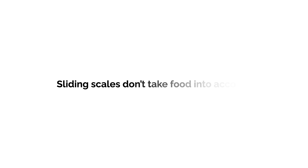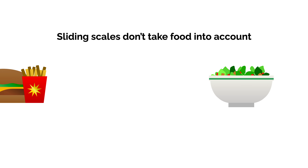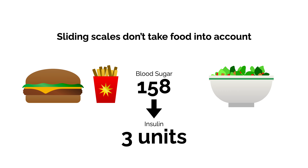The sliding scale doesn't take into account any information about the food that you are planning to eat. For example, if you were going to eat a salad one day and a large burger and fries the next, as long as your blood sugar was the same at the start of each meal, you'd administer the same amount of insulin. Even though those two meals have very different amounts of carbohydrates and would likely have very different effects on your blood sugar, the same amount of insulin is given, because your blood sugar is the same.